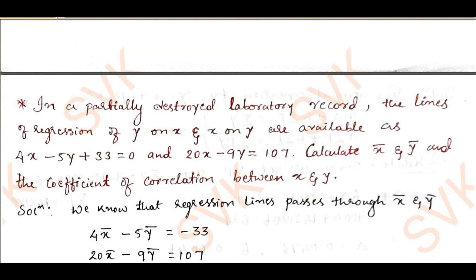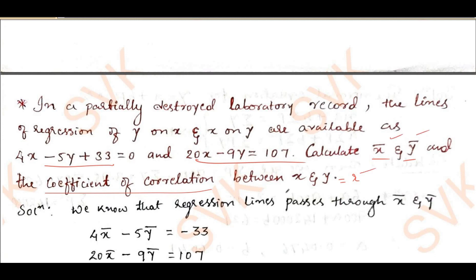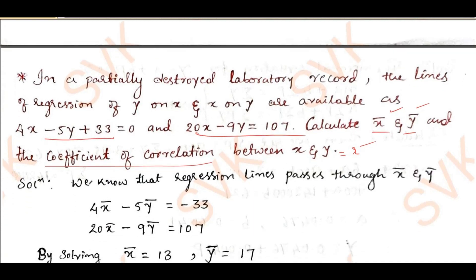Moving on to the next problem: in a partially destroyed laboratory record, the lines of regression y on x and x on y are available. We need to calculate x̄, ȳ, and the coefficient of correlation r between x and y. Since regression lines pass through the point (x̄, ȳ), we can use that property to solve the system.